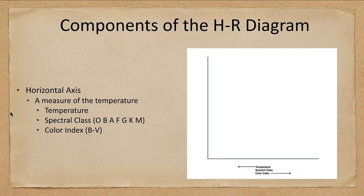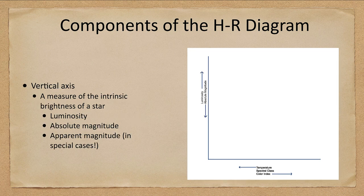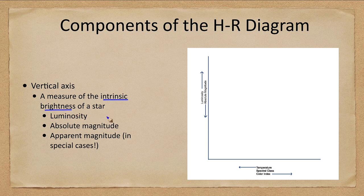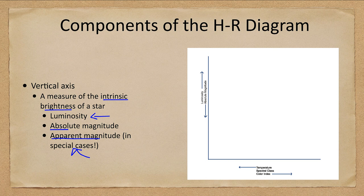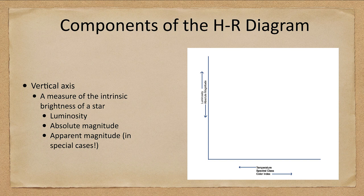Now on the vertical axis, we measure the intrinsic brightness. Now that means the luminosity, the absolute magnitude, or in special cases, the apparent magnitude. And that would be when we're looking at star clusters where they're all essentially the same distance away from us.